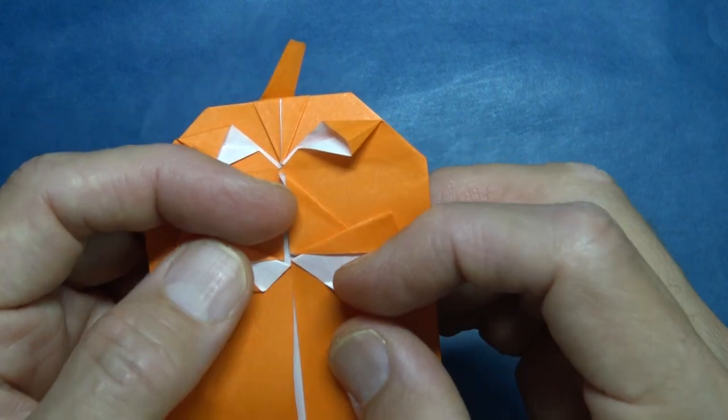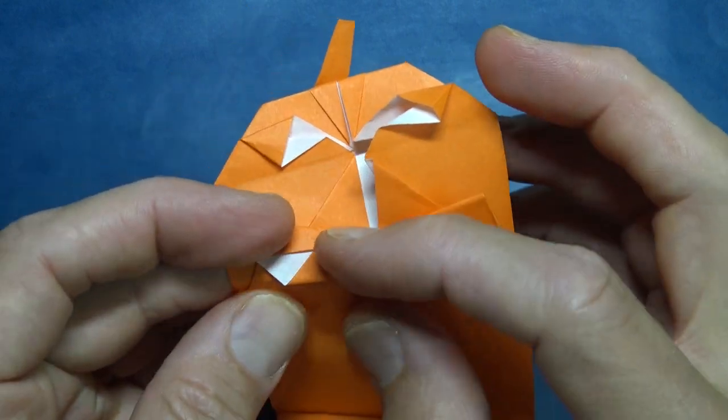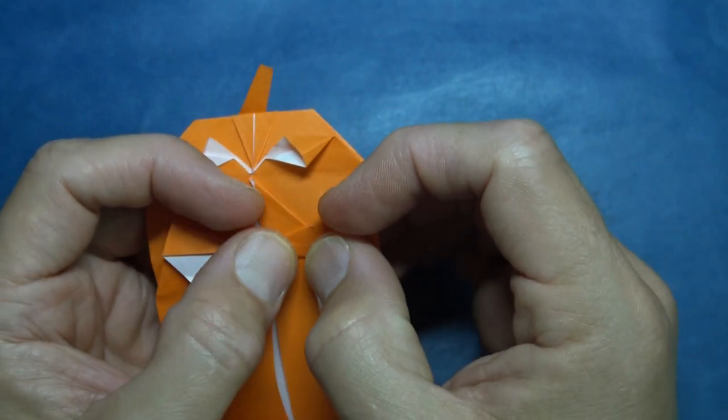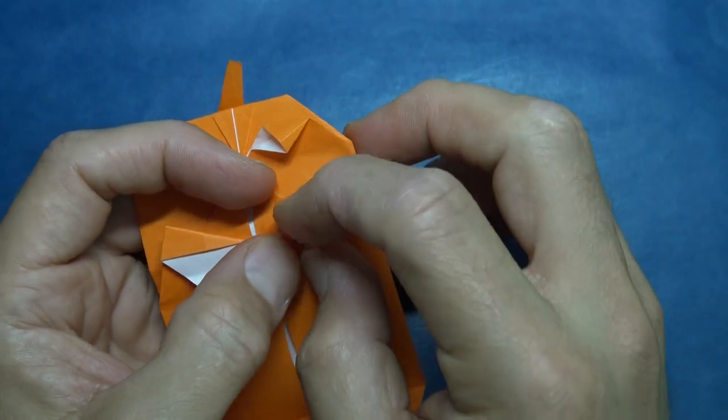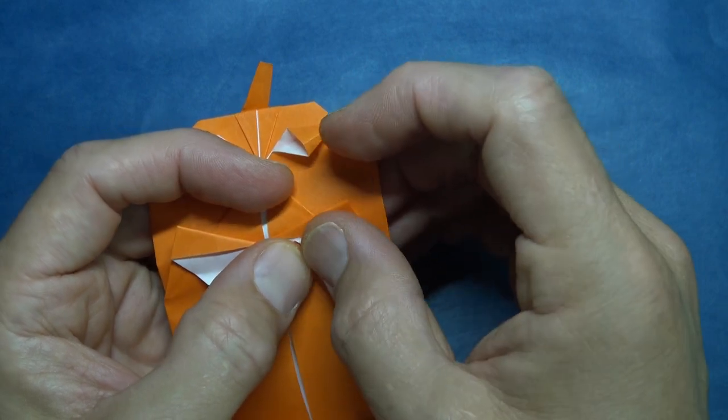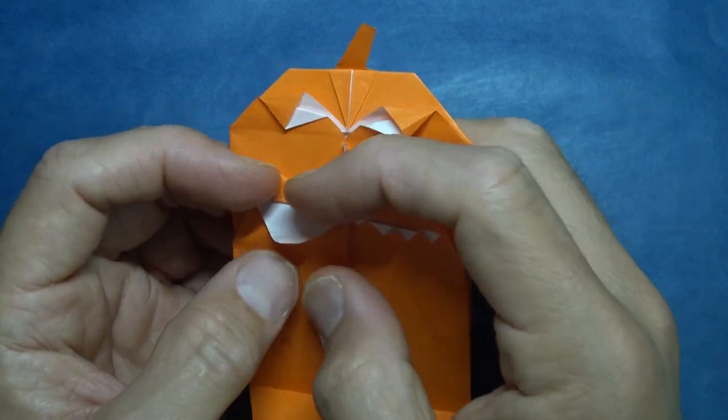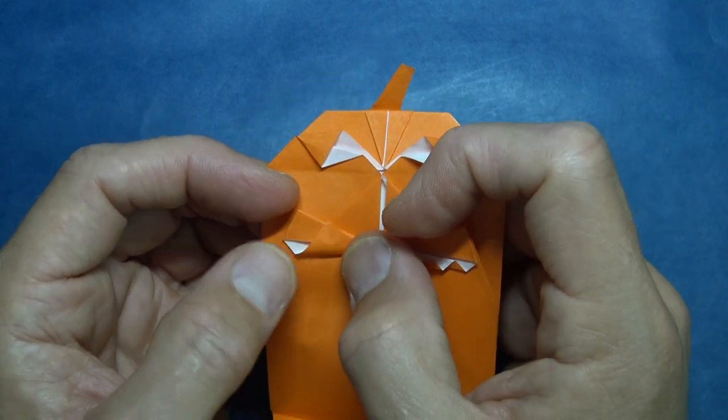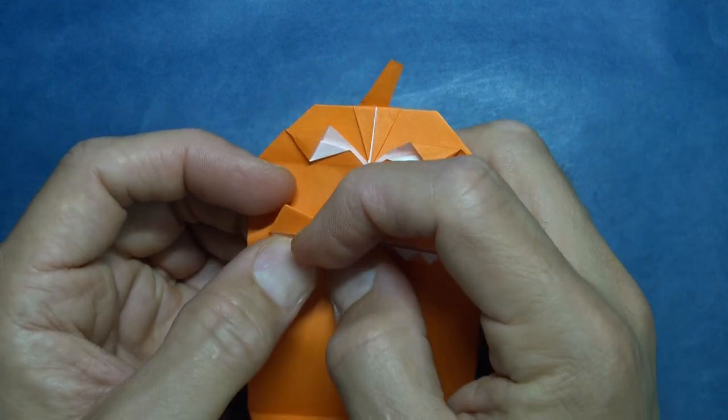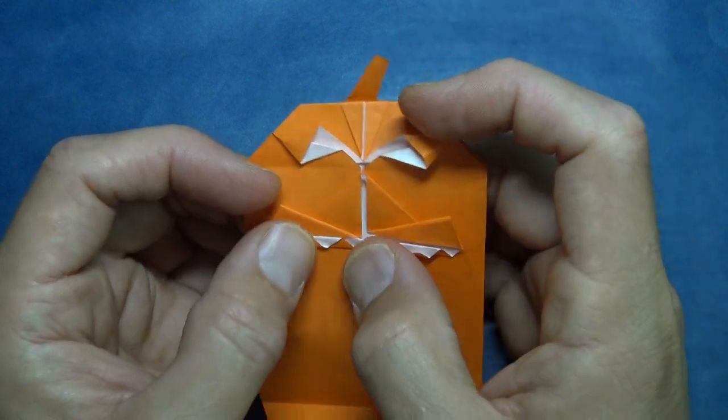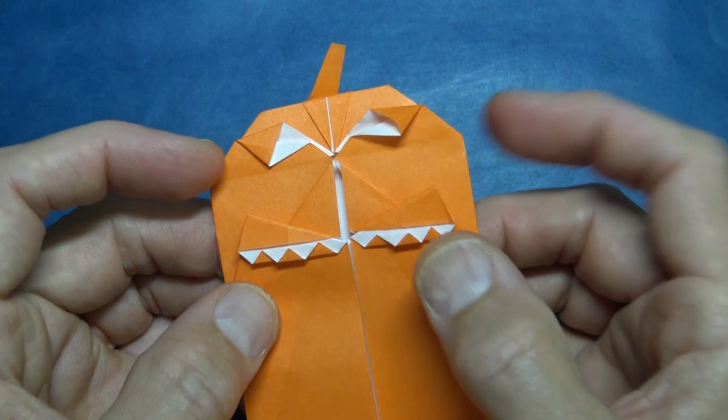And now unfold and fold so that the creases go up. We're going to double the number of teeth. And fold down and back up. And repeat. And repeat. Okay, there's eight teeth.